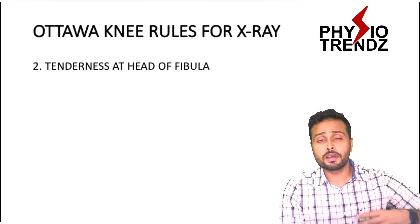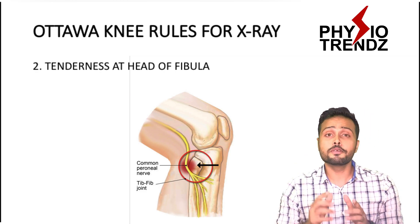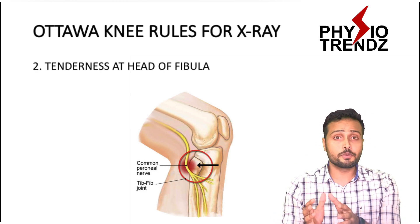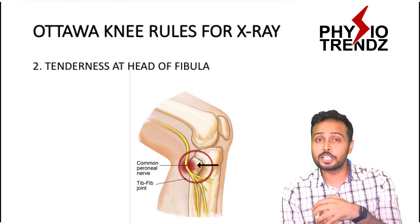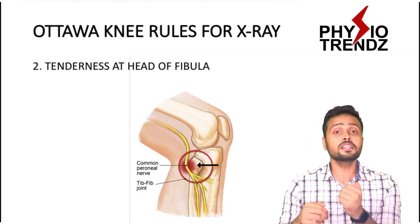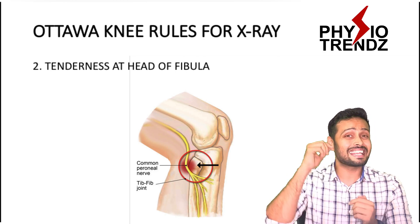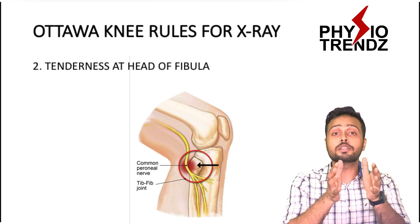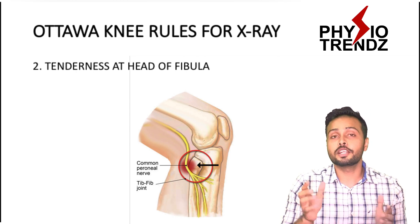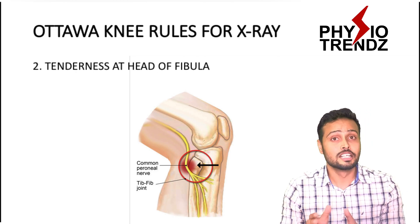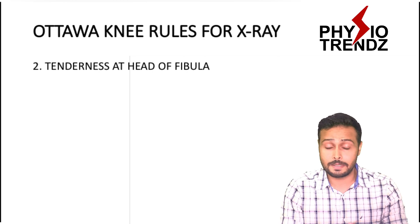The second point is tenderness at the head of the fibula. Normally the fibula head is not a part of weight bearing over the knee joint, but whenever after an injury there is tenderness over the head of the fibula, that can signify something is wrong with the fibula. That is why we should go for x-ray analysis if such a case is present.